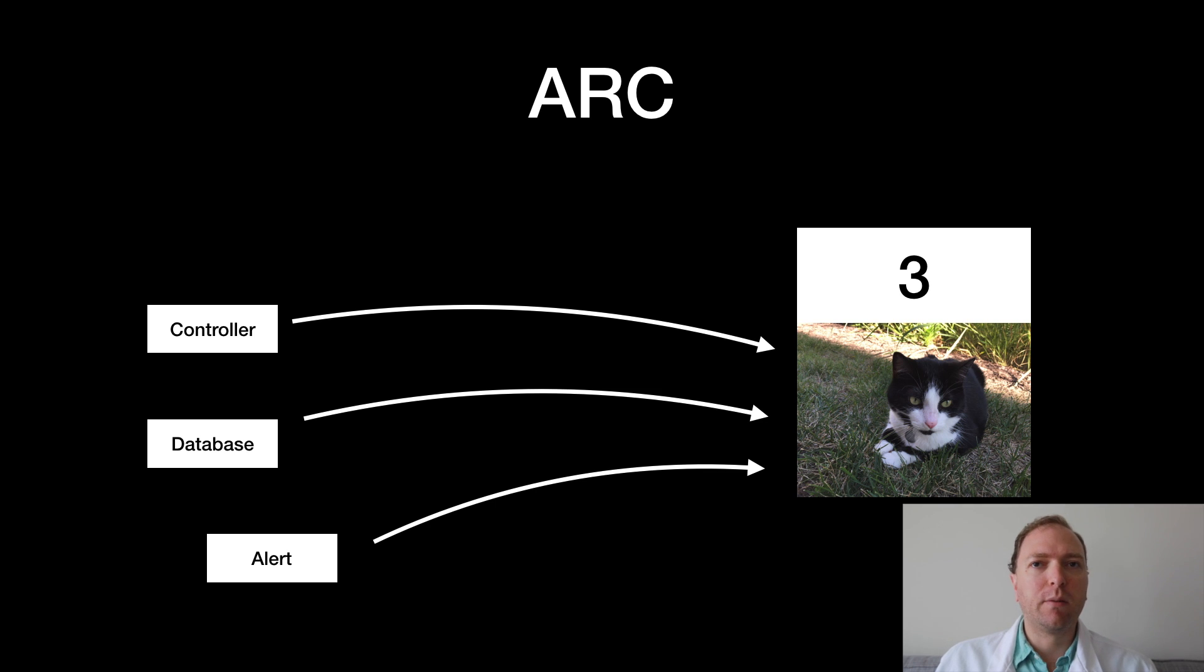It does this by tracking the number of owners for each object. In this case, it's three. When a new reference comes in, ARC increments the count. The widget now references the cat picture and the count is now four.